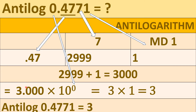The 3000 you have to write as 3.000, placing the decimal after the first digit from the left-hand side. Then you write into 10 raised to the power of whatever the characteristic is. Here the characteristic is 0, so 3.000 into 10 raised to the power 0 is nothing but 3 times 1, which is 3. Thus anti-log 0.4771 equals 3.